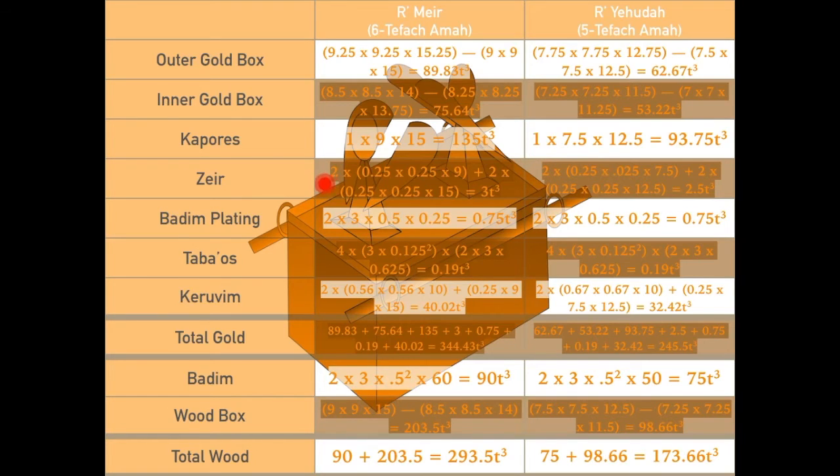The Aron also had a zeir, a crown. According to Rabbi Meir, it took up approximately three cubic tefachim, while according to Rabbi Yehuda, it took up only two and a half cubic tefachim. Although the Gemara in Sukkah says that the zeir was only a tiny bit thick, I couldn't multiply the numbers by infinitesimal, and so I rounded up to an etzba. Like I said, my numbers are extremely rough.